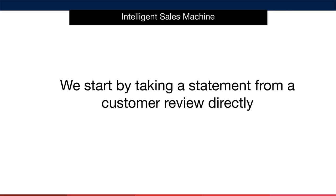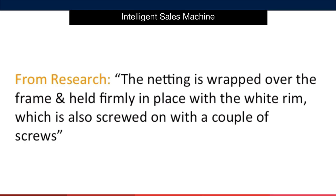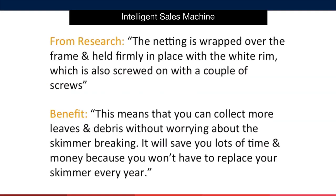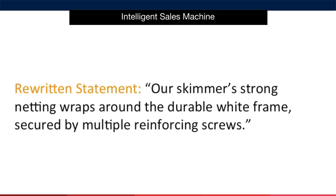How do we do that? The first thing we do is take the direct quote from the customer's review — we'll find this within our Amazon review mining. Here's the statement a customer made inside a review on a competing product: 'The netting is wrapped over the frame and held firmly in place with the white ring, which is also secured on with a couple of white screws.' We then write a benefit statement based on that content: 'This means that you can collect more leaves and debris without worrying about the skimmer breaking. It will save you lots of time and money because you won't have to replace your skimmer every year.' We're connecting a feature with a benefit, and we rewrite the original piece copied from the customer's review into our own words. It looks something like: 'Our skimmer's strong netting wraps around the durable white frame, secured by multiple reinforcing screws.'